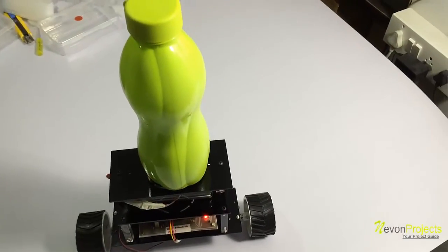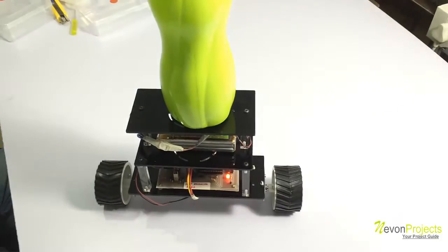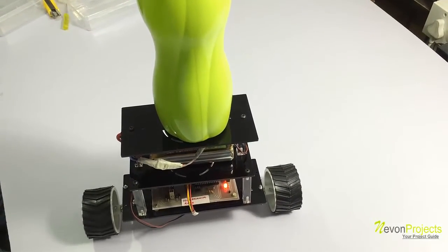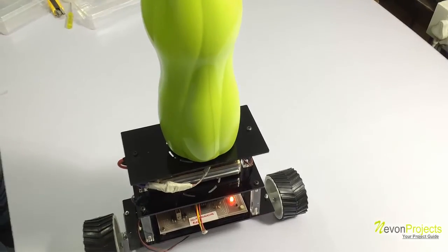As you can see, this is how it can efficiently balance itself as well as small objects that are placed on it. This is how the self-balancing robot project works. Thank you.